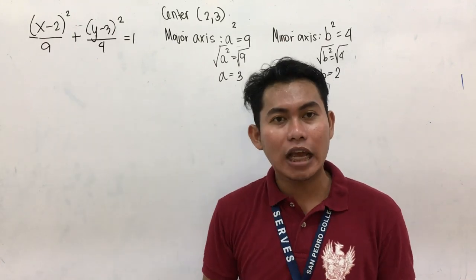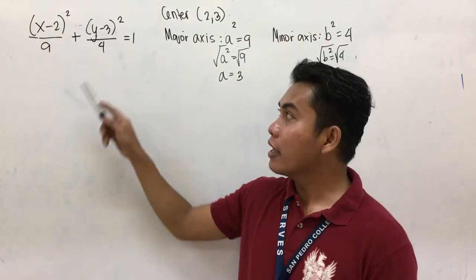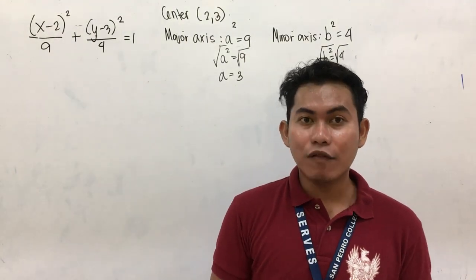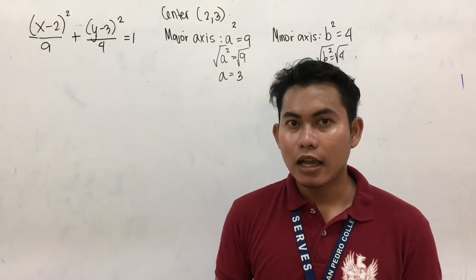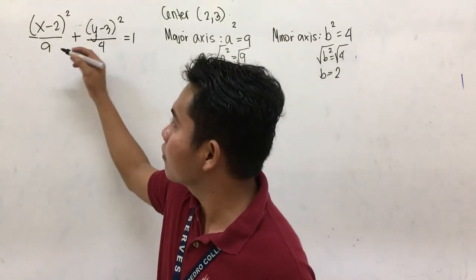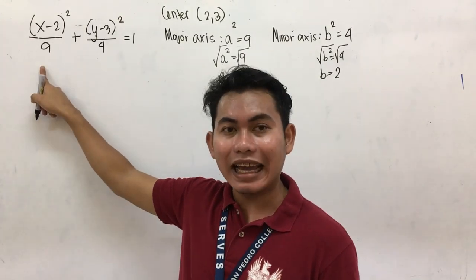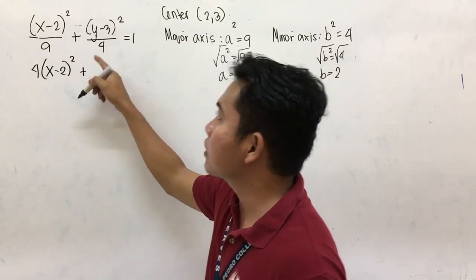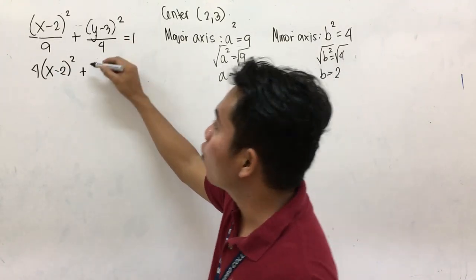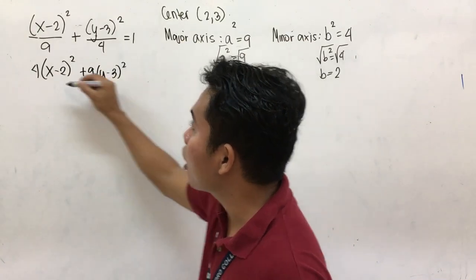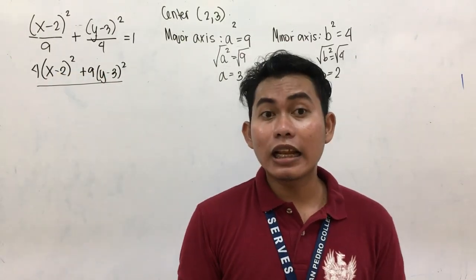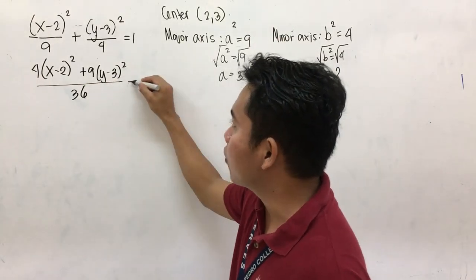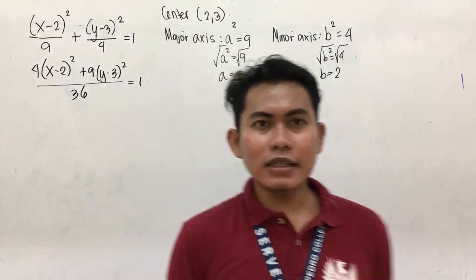The first step is to simplify by finding the LCD — the least common denominator of 9 and 4. Our denominators are 9 and 4, so the LCD is 36. So we have: 36 divided by 9 is 4, giving us 4 times (x minus 2) squared, plus 36 divided by 4 is 9, giving us 9 times (y minus 3) squared, all over 36, equal to 1.